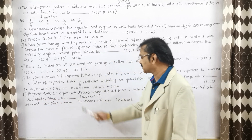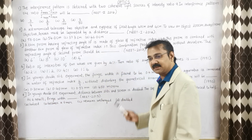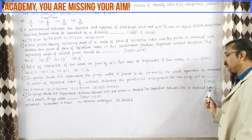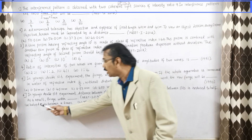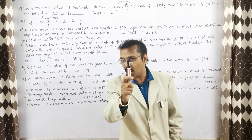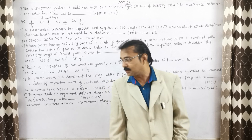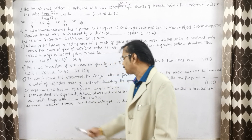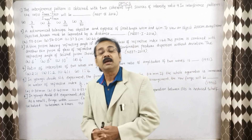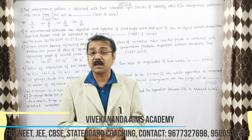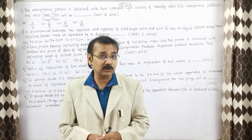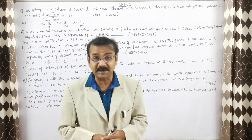In Young's double-slit experiment, the distance between the slits and the screen is doubled. The separation between the slits is reduced to half. As a result, the fringe width is what? This question has been asked since 2013. The options are: fringe width becomes four times, remains unchanged, or doubles.